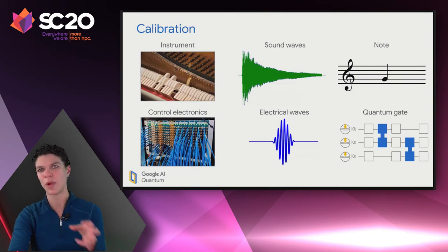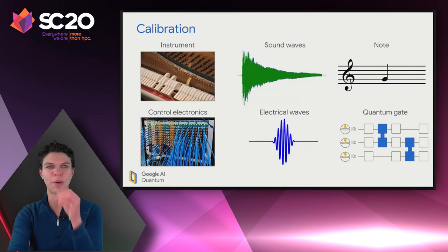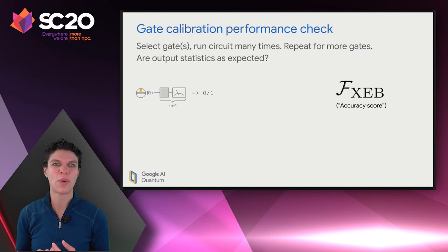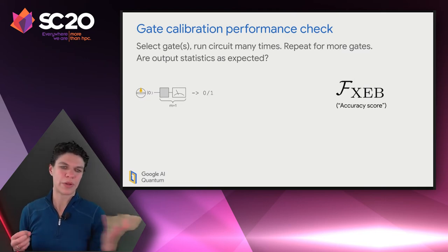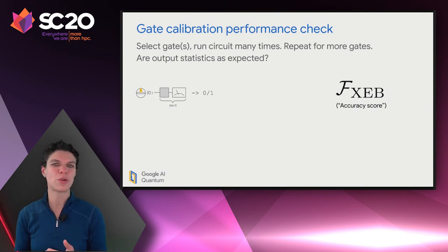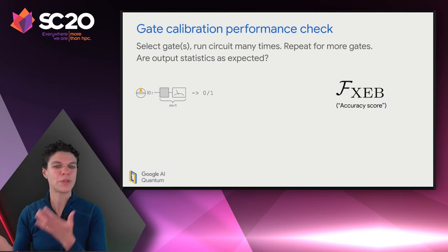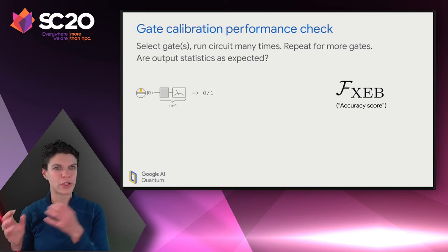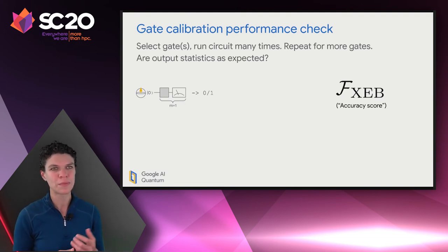A capable musician knows how to use their instrument to get a listener to hear the sound they want. Similarly, we have to learn how to use our control electronics to get the qubits to respond with the quantum gates we wish. The way we write out quantum gates looks like sheet music: each horizontal line is one qubit, time goes from left to right, and we play the gates across. Single qubit gates are white boxes; two-qubit gates are blue boxes connecting two qubit lines. We perform calibration of individual gates and check to see how well we've done.